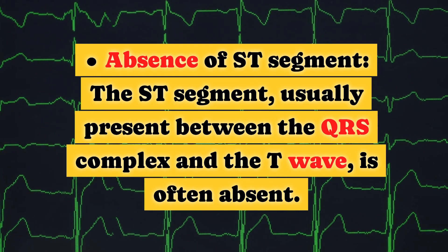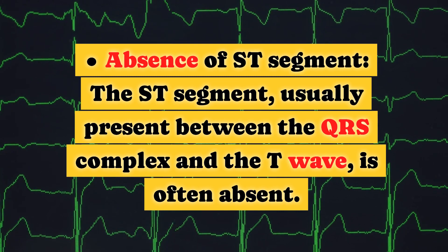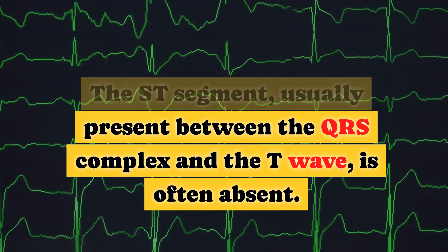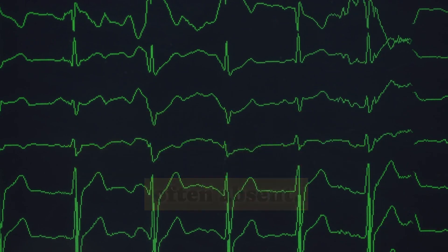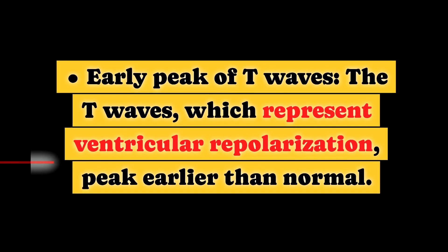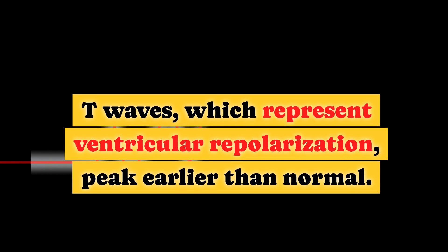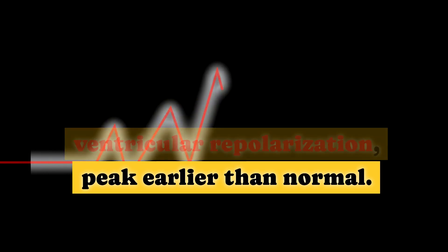The ST segment, usually present between the QRS complex and the T wave, is often absent. Early peak of T waves: The T waves, which represent ventricular repolarization, peak earlier than normal.